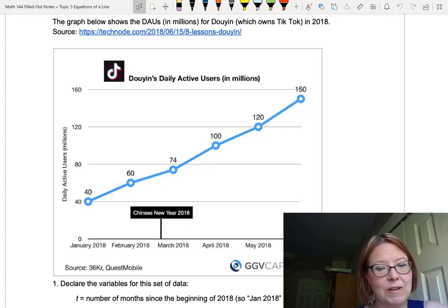And just moving from left to right, the six values we have are 40, 60, 74, 100, 120, and 150.